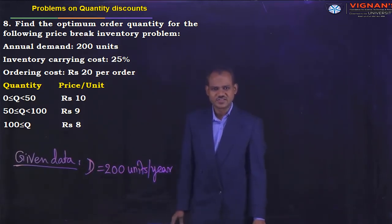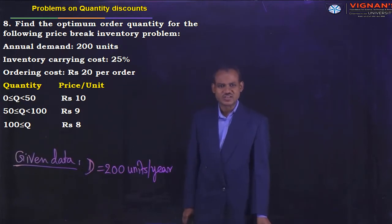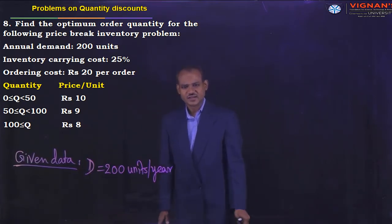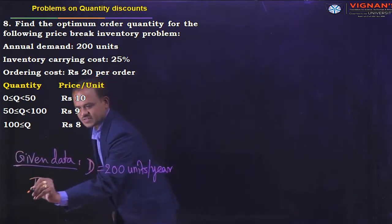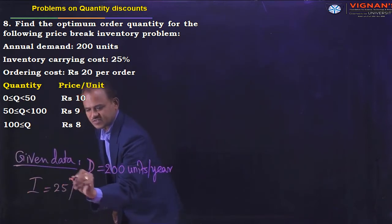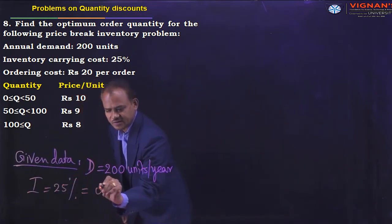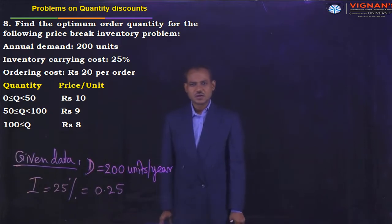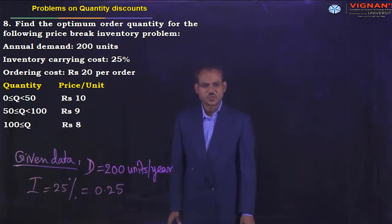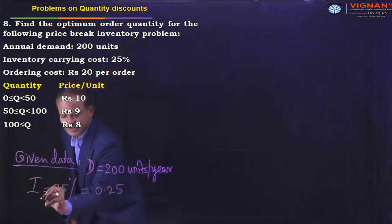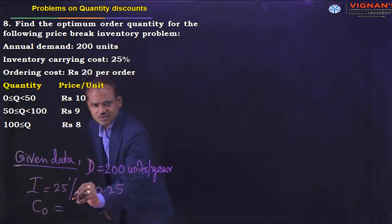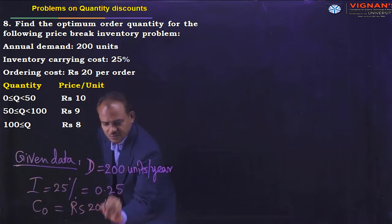Inventory carrying cost is 25 percent. If the given value is in percentage form, I value is given as 25 percent, that is I = 0.25. Next, ordering cost is 20 rupees per order, symbolically represented as C-naught = 20 rupees per order.